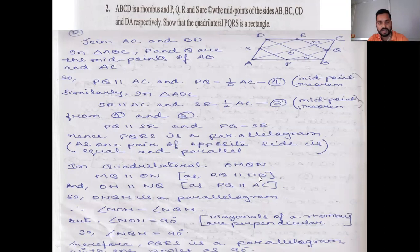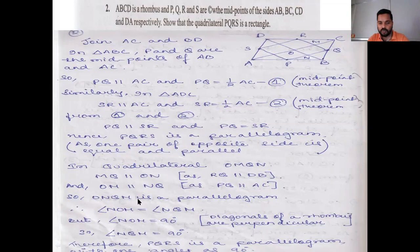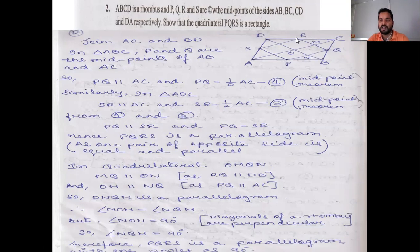RQ is parallel to DB by the midpoint theorem. Similarly OM is parallel to NQ because PQ is parallel to AC. Since opposite sides of quadrilateral OMQN are parallel, it is a parallelogram. In a parallelogram, opposite angles are equal, so angle NOM equals angle NQM. But angle NOM is 90 degrees because diagonals of a rhombus bisect each other at right angles. Therefore angle NQM is also 90 degrees. Hence PQRS is a parallelogram with one internal angle of 90 degrees, so PQRS is a rectangle.